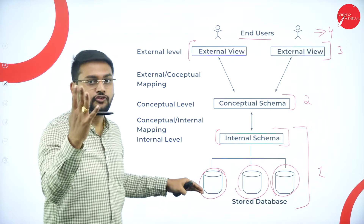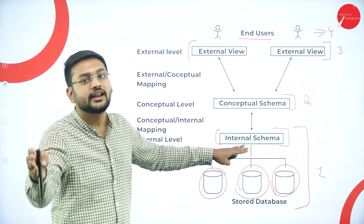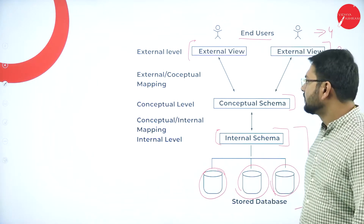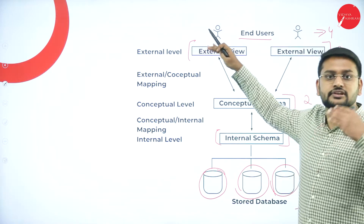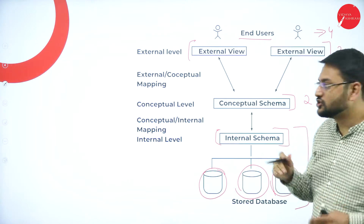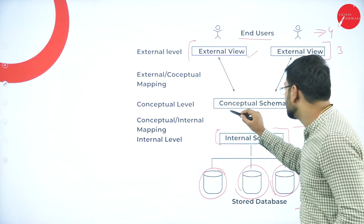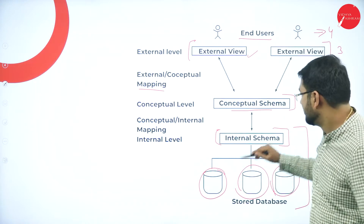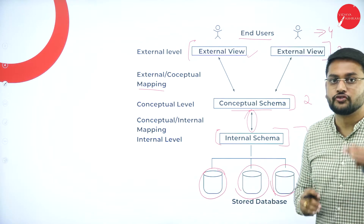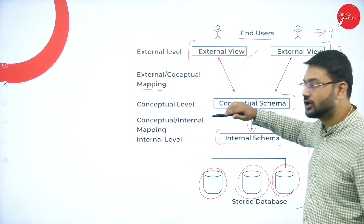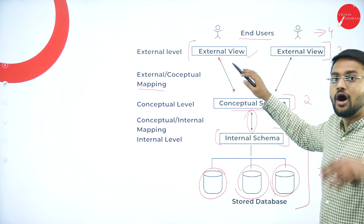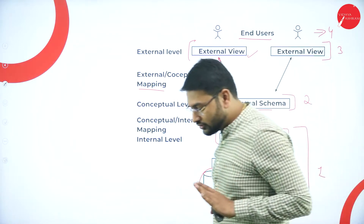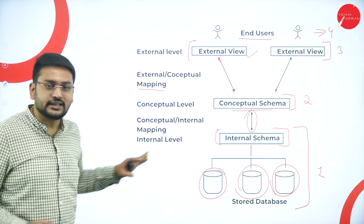So we have four parts: internal schema connected to different data sources, then conceptual schema above it, then external view, and users. We also need something which connects the external level or external view to the conceptual schema — that is what we call mapping. Similarly, mapping is also happening between the conceptual schema and the internal schema.